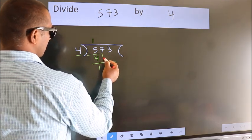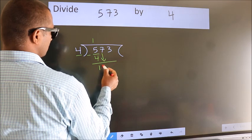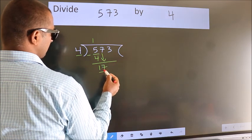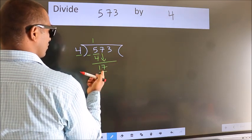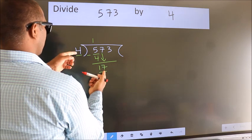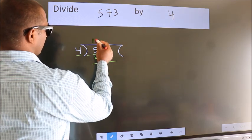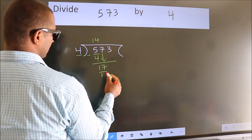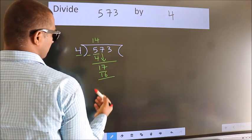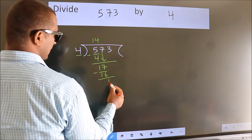After this, bring down the beside number. So 7 down, giving us 17. A number close to 17 in the 4 table is 4 fours, 16. Now we subtract. We get 1.